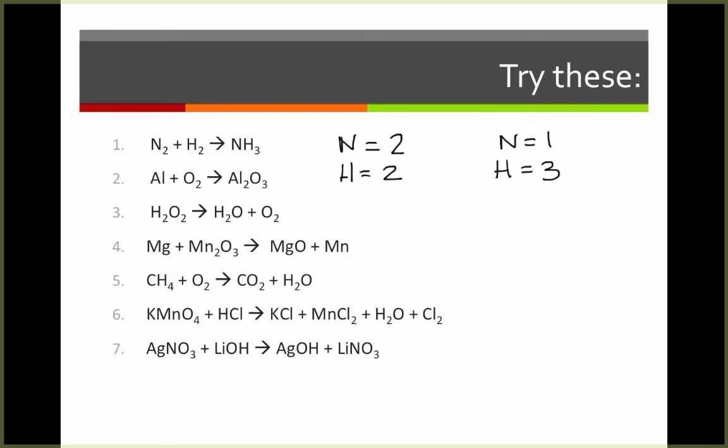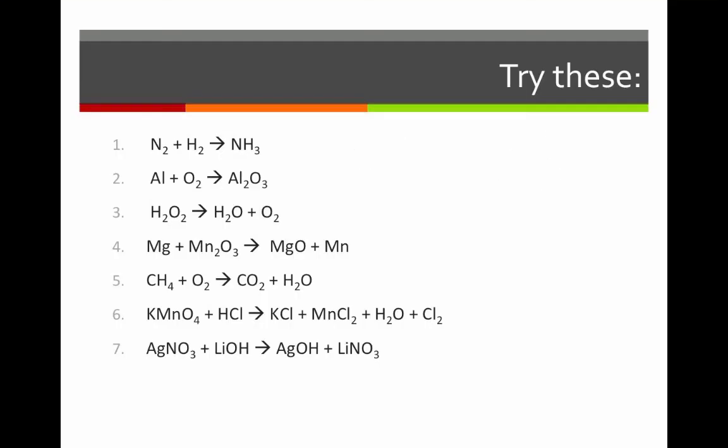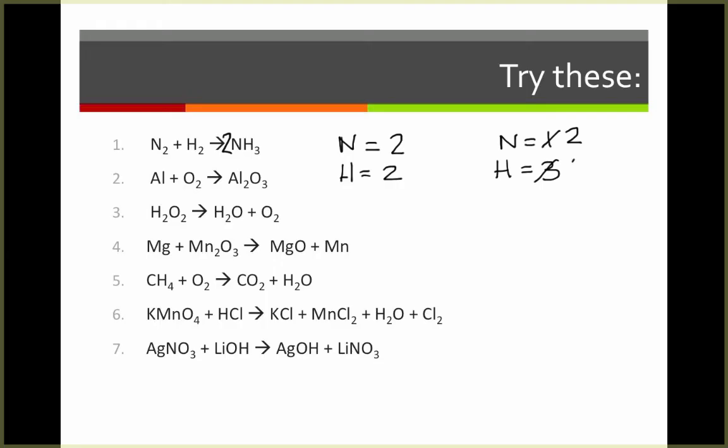The easiest thing to fix here is my nitrogens, so I'm going to start with that. I'm going to add a coefficient of two in front of NH3. This now gives me two nitrogens but six hydrogens, three times two is six. Now, I need to fix my hydrogens. I'm going to do that by adding a coefficient of three in front of H2, giving me six hydrogens. And this equation is now balanced.